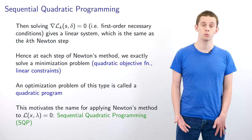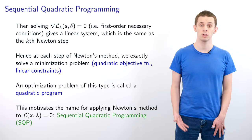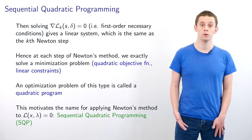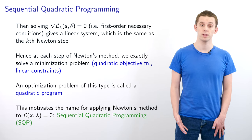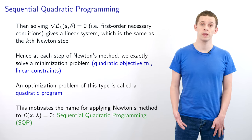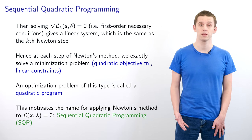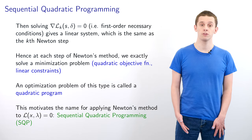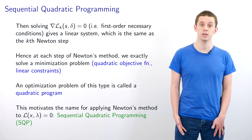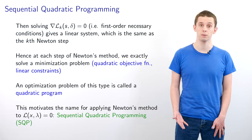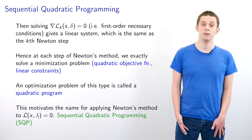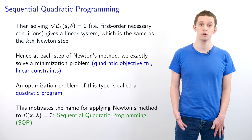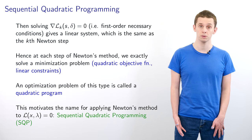This provides us with insight because it shows us that each step of Newton's method we're exactly solving a minimization problem with a quadratic objective function and linear constraints. An optimization problem of this type is called a quadratic program. This motivates the name for applying Newton's method to solve ∇L = 0. We call this sequential quadratic programming or SQP.